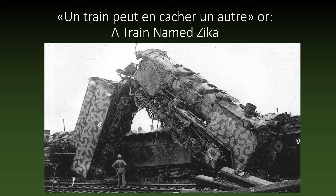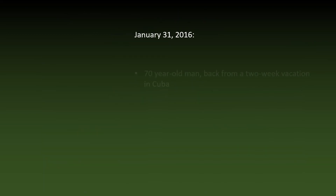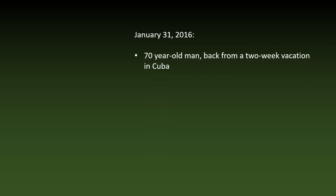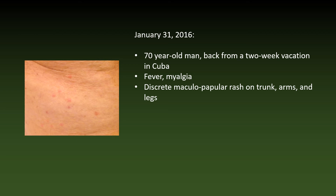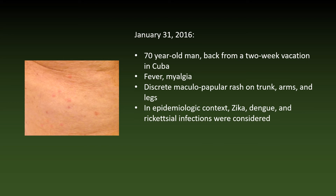Finally, a tragic case where one suspected diagnosis missed another — similar to what the signs say at every train crossing in France. In January 2016, a 70-year-old man with no notable medical history presented at a tropical disease clinic a few days after returning from a two-week family vacation in Cuba, with complaints of fever and diffuse myalgia. A discreet maculopapular rash was present on his arms, legs, and trunk. Considering the history, infection with Zika virus, dengue fever, or rickettsiosis were considered likely. The patient was sent home with a prescription for doxycycline; all laboratory results came back negative, and the skin rash disappeared completely within two weeks.